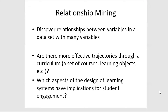A third big category is relationship mining — discovering relationships between variables in a dataset with a lot of variables. For example, are there more effective trajectories through a curriculum, like a set of courses or learning objects? And what aspects of the design of learning systems have implications for student engagement?